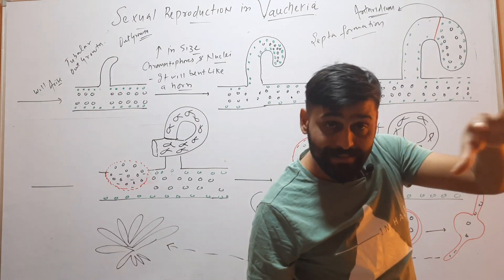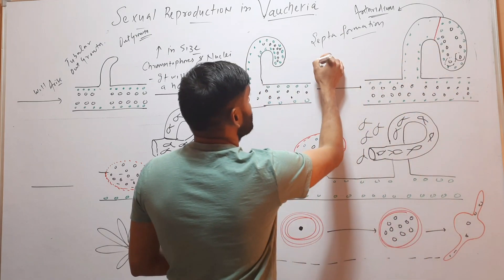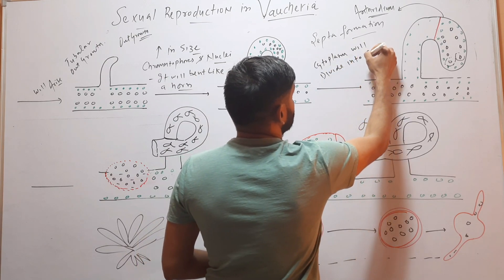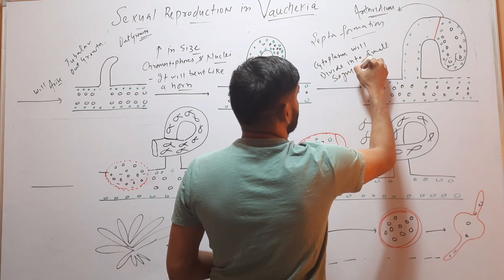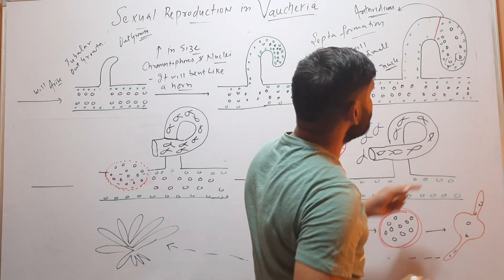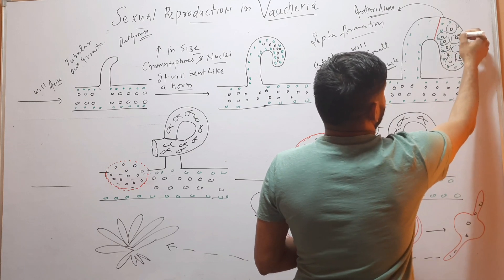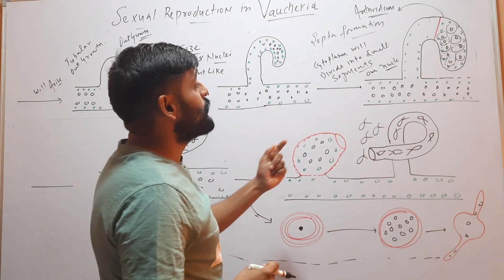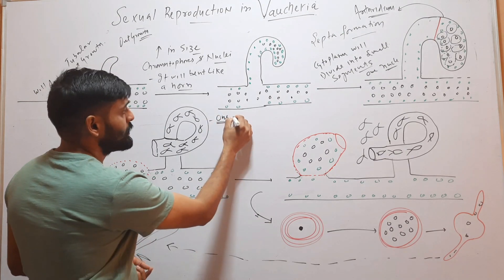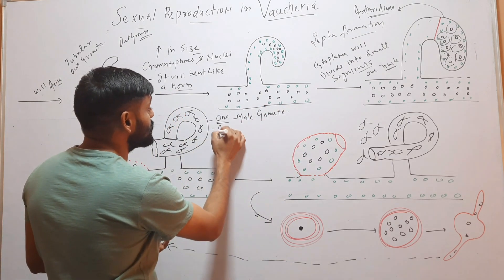The Antheridium has many nuclei, chromatophores, and cytoplasm. Now its cytoplasm will divide into small segments, and each segment will have a single nucleus. Each of these segments will form one male gamete. The male gametes of Vaucheria are called Antherozoids.